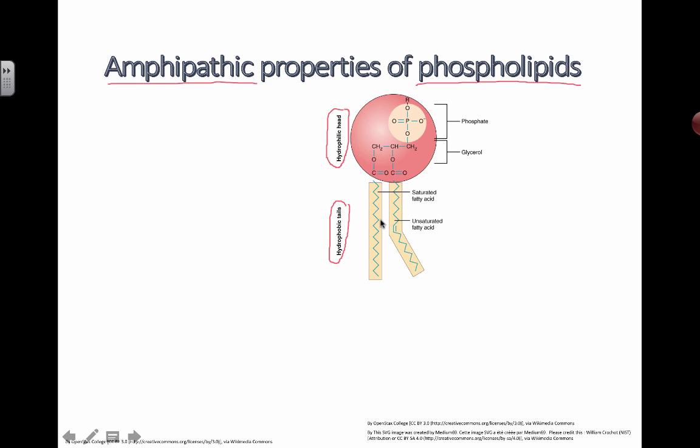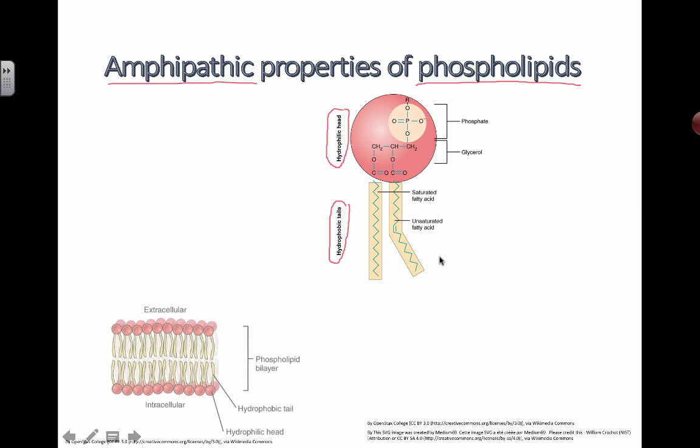And for the part that doesn't like water, or the hydrophobic tails, you end up with a lot of these non-polar carbon chains. When you see something that looks like this with all these jagged lines, all these corners are actually carbons, and all the rest of the spaces are filled up with hydrogens, except for here where there's a double bond, which means there's a few less hydrogens located over here.